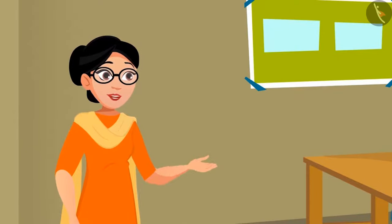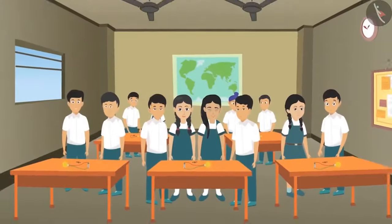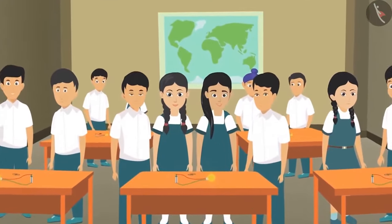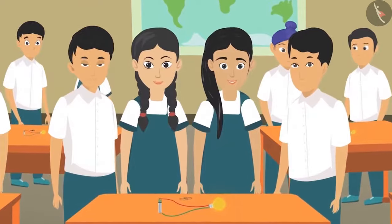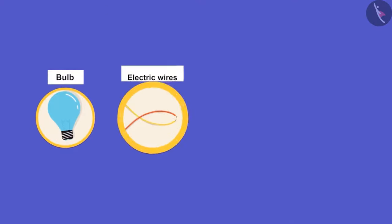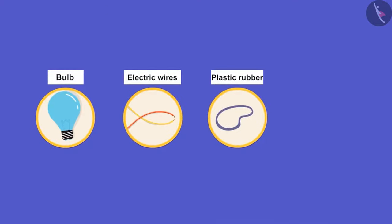'Let's do something interesting today, kids.' Seema Didi makes groups of four children and gives each group a bulb, some electric wires, plastic rubber, and an electric cell.